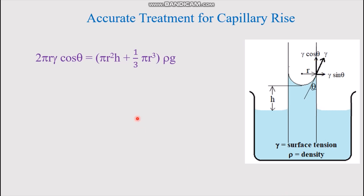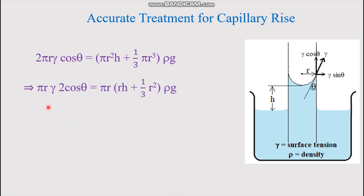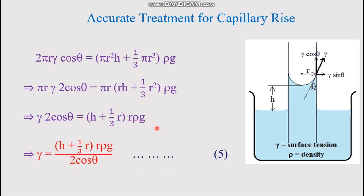Substituting into the equilibrium equation: 2πr·γ·cosθ = (πr²h + (1/3)πr³)·ρ·g. Factoring out πr from both sides and simplifying, we obtain equation number 5: γ = (h + r/3)·r·ρ·g / (2cosθ).